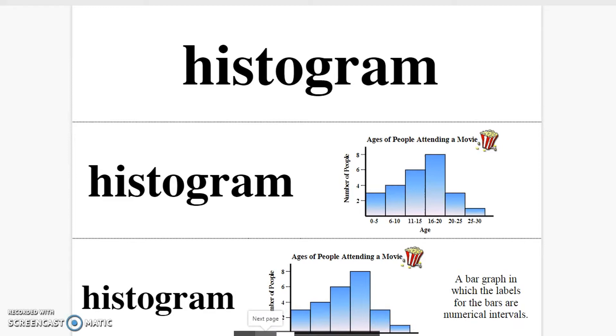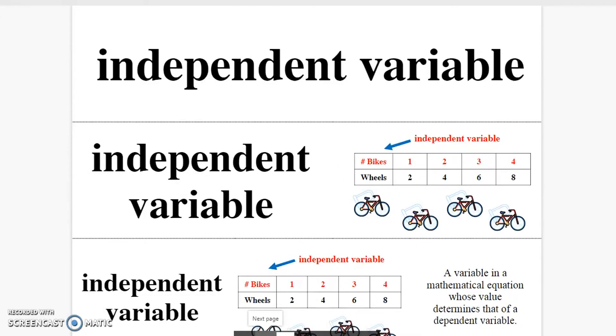Histogram. A bar graph in which the labels for the bars are numerical intervals. Independent variable. A variable in a mathematical equation whose value determines that of a dependent variable.